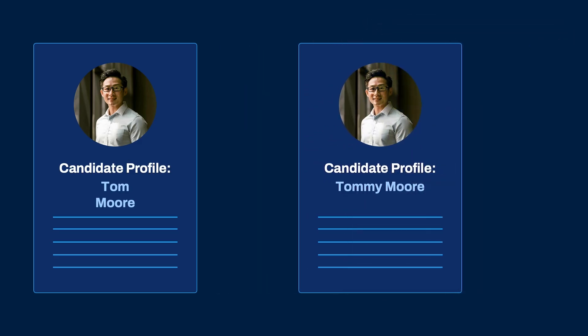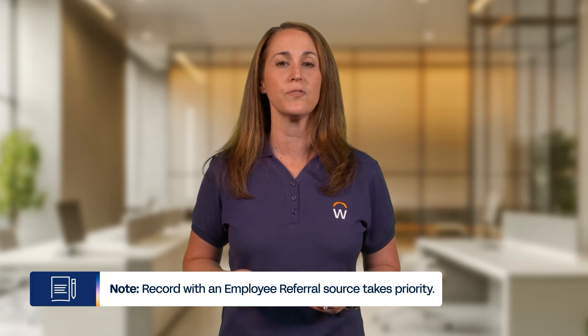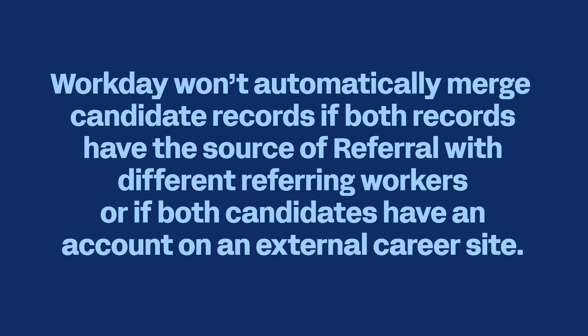When you merge two records, you select which record to merge. The other record becomes inactive but remains in the system. Note that if one of the two records has an employee referral source, that source always becomes the source for the remaining record. To prevent duplicate candidates in the system, Workday can even automatically merge these records, combining information into a single, complete profile. Workday won't automatically merge candidate records if both records have the source of referral with different referring workers, or if both candidates have an account on an external career site. Workday also allows you to manually merge or unmerge records for complete control.